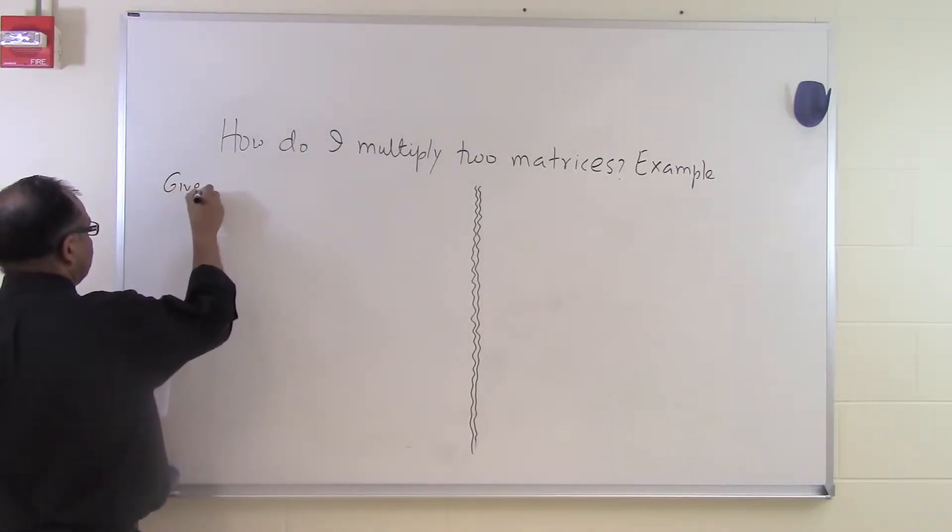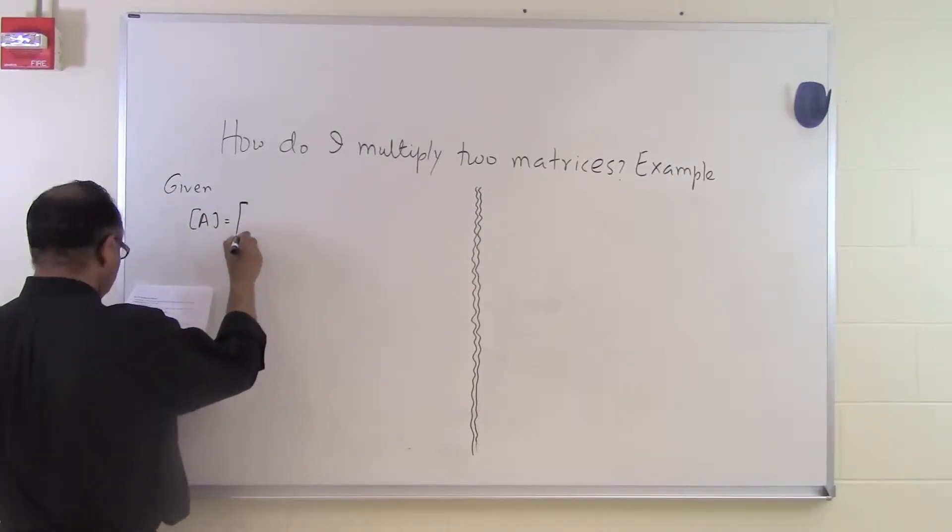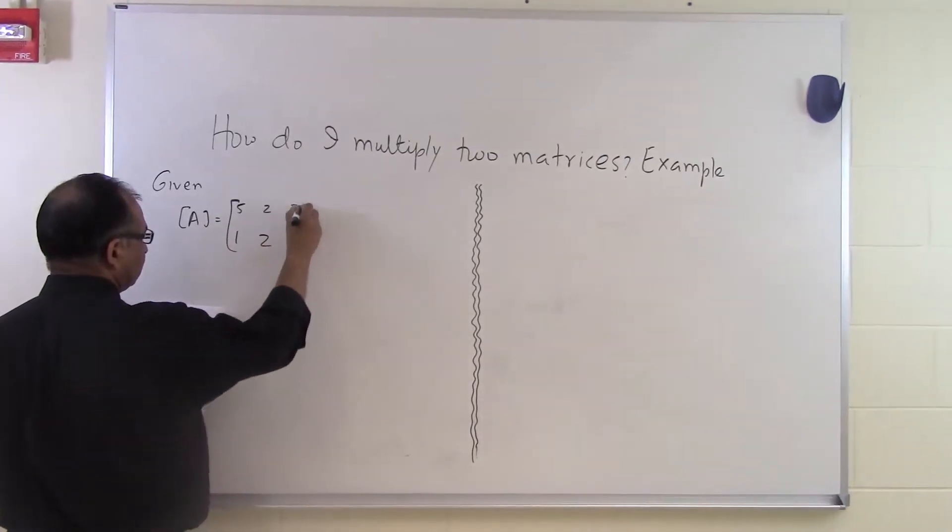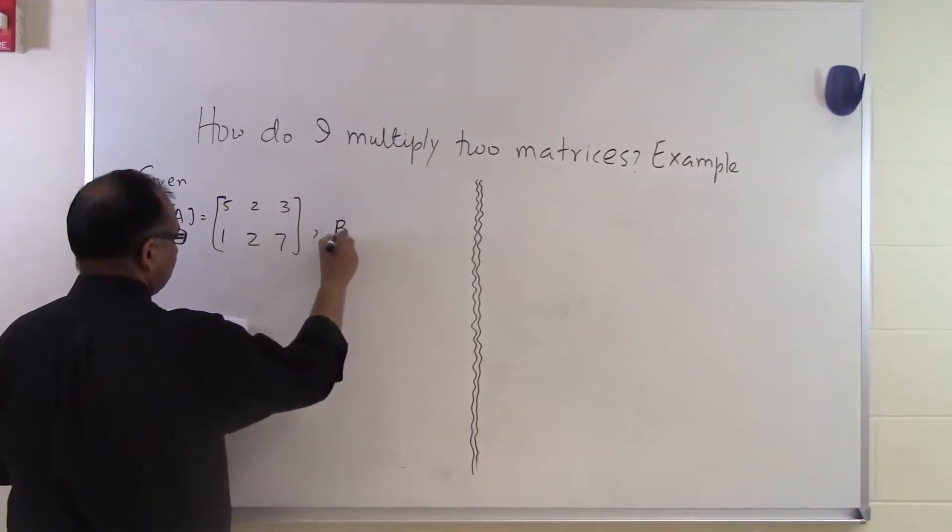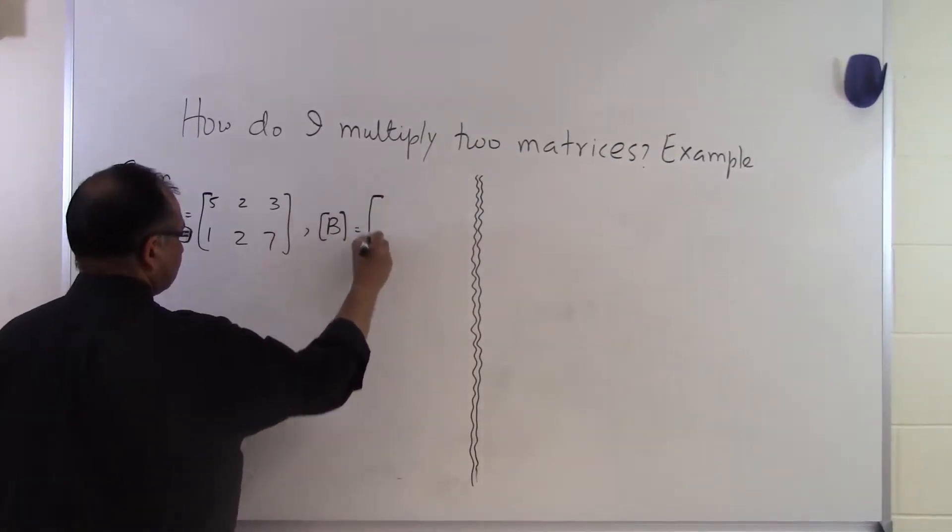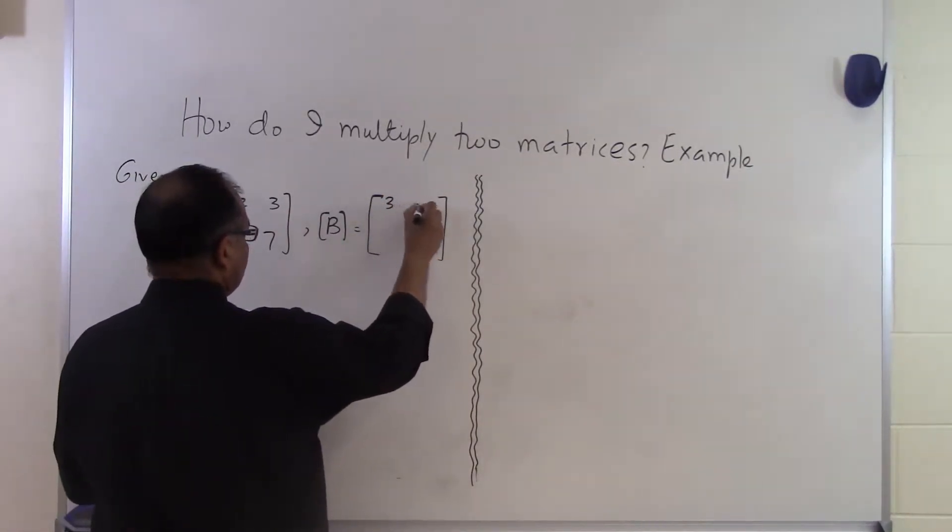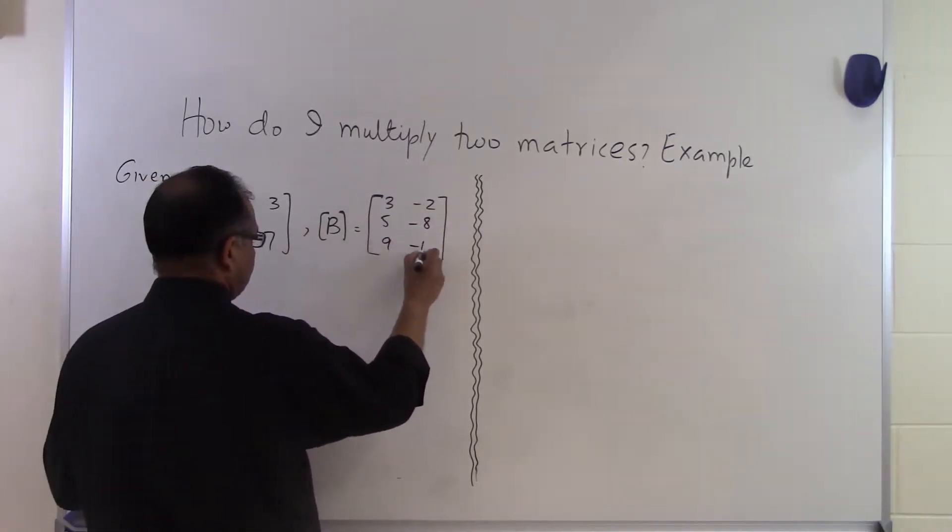Given the matrix A as 5, 2, 3, 1, 2, 7, and the B matrix is given as 3, minus 2, 5, minus 8, 9, minus 10.